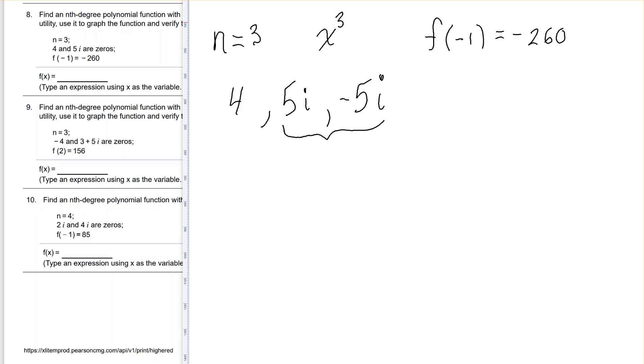Please note they also tell us that f of negative 1 is negative 260. And we won't use that until the very end. So they're telling us x is 4, x is 5i, x is negative 5i.